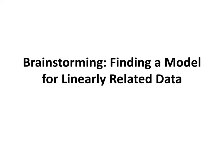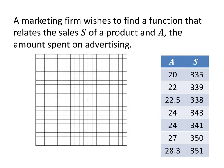In this video, we're going to learn about how to find a model for linearly-related data. We're going to do it using an example. In this problem, a marketing firm wishes to find a function that relates the sales of a product and the amount spent on advertising. This is really a typical real-world problem.